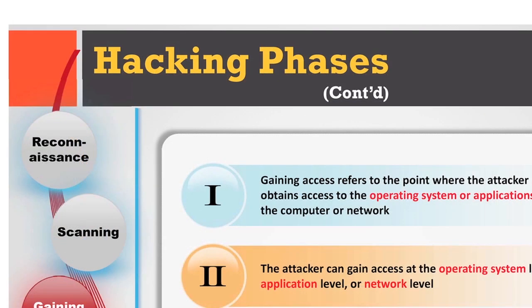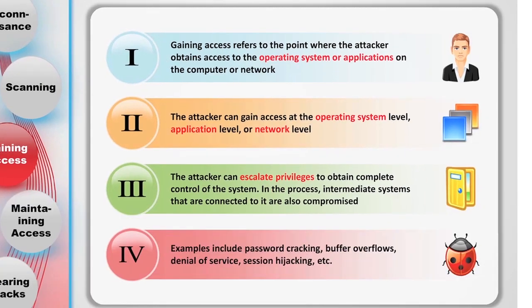Next hacking phase is gaining access. Once we scan and find a point of access, that refers to where we attain access to the operating system or application on a computer or the network. We can gain access at the operating system level, application level, or network level. Then we escalate our privileges — if we don't have privileged access, we escalate to obtain complete control of the system. In this process, intermediate systems connected to it are also compromised.